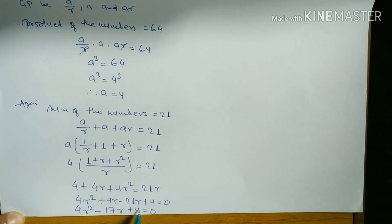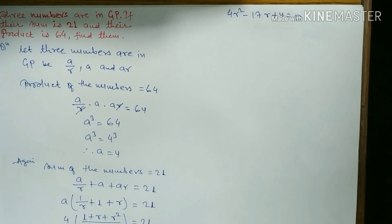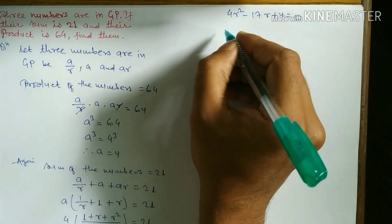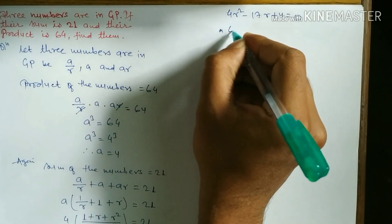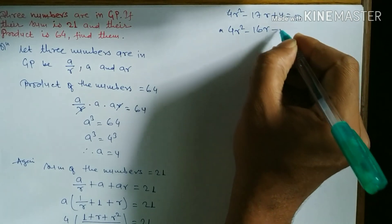To factorize, multiply first and last coefficients: 4 × 4 = 16. We need two numbers whose product is 16 and sum is 17, which is 16 and 1. So we split the middle term: 4r² - 16r - r + 4 = 0.